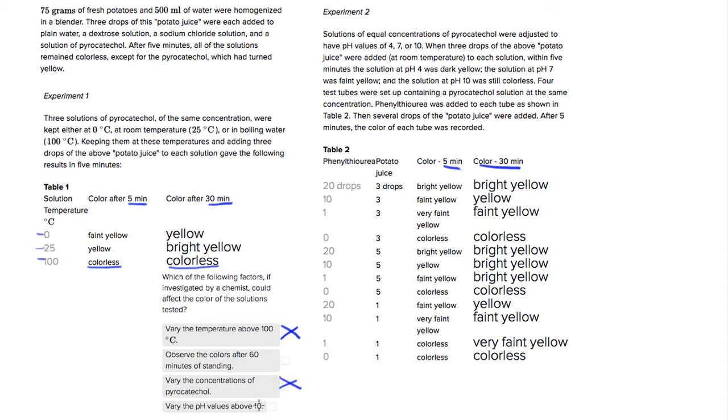And choice number four is similar to choice one. If we varied our pH levels above 10, we saw that at pH 10, the solution was still colorless. So it leads us to believe that like having temperatures above 100, if the pH levels were higher, then the solution would probably be colorless. So the only thing that makes a lot of sense is choice two.